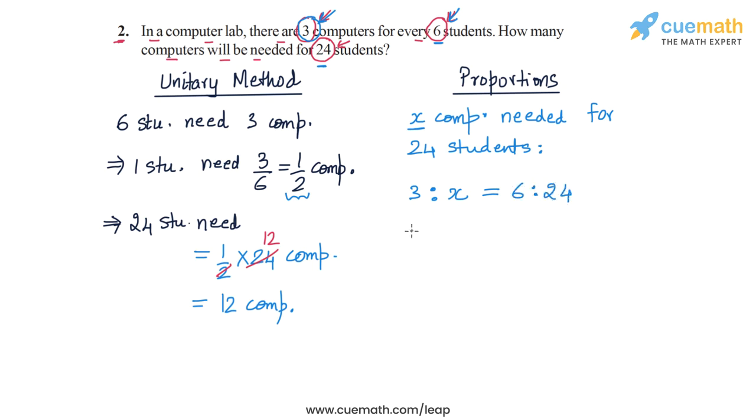So 3 is to x we can write as 3 by x, and 6 is to 24 we can write as 6 by 24. Now 6 by 24 is actually equal to 1 by 4, and if we cross multiply, x with 1 and 4 with 3, we get x is equal to 12.